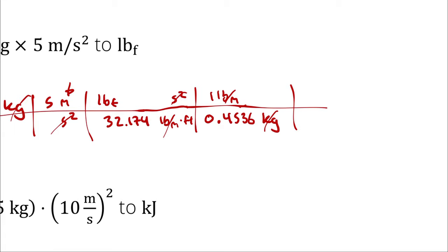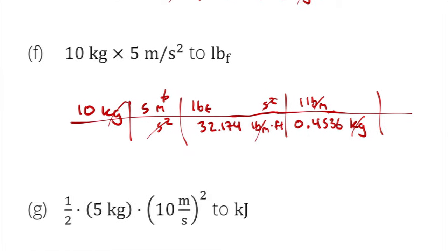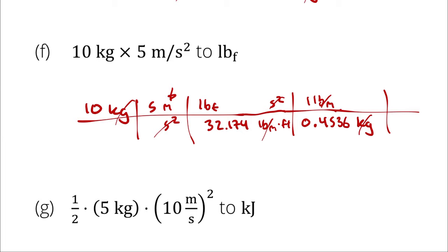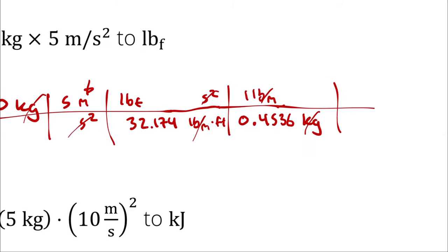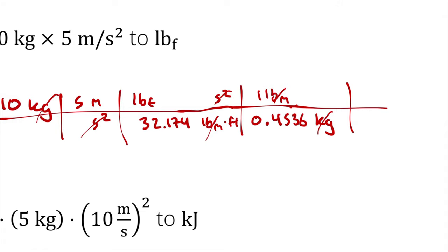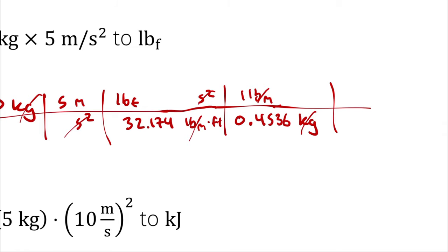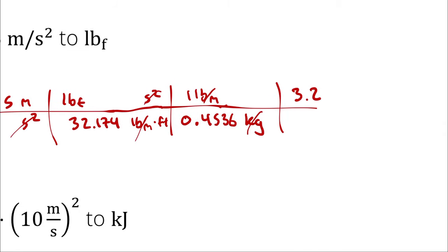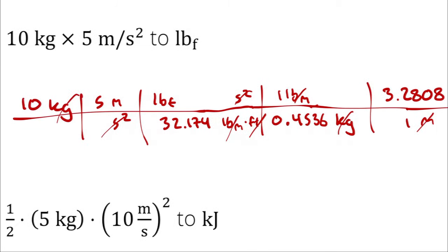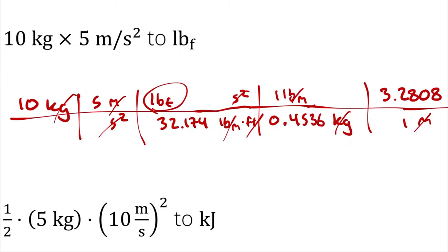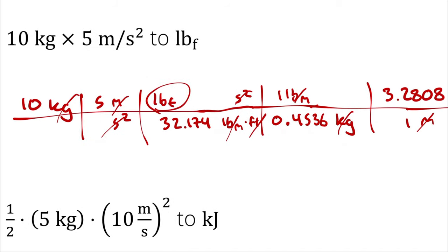So: meters to feet — one meter is 3.2808 feet. I write 3.2808 feet over 1 meter. Feet cancels feet, meters cancels meters, and I am left with pounds of force. So I take 10 times 5 times 3.2808, divided by 32.174 times 0.4536, and I get 11.24 pounds of force.